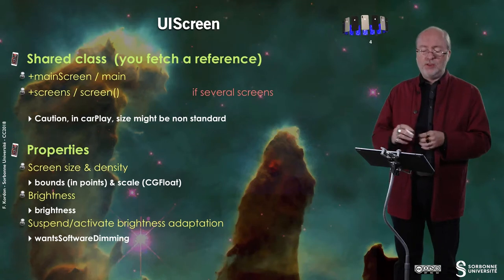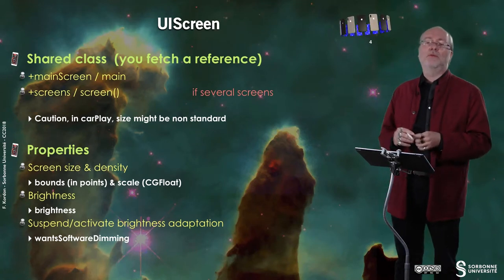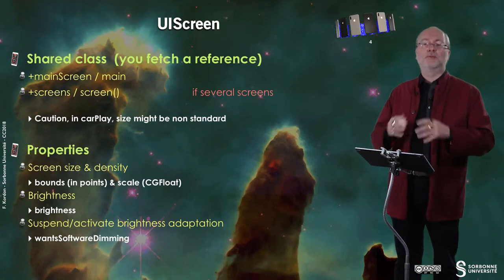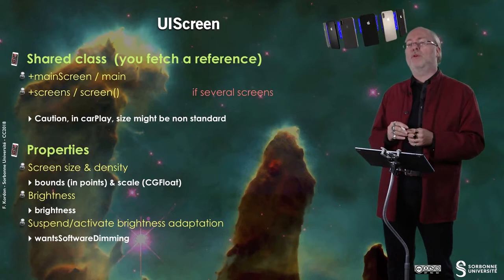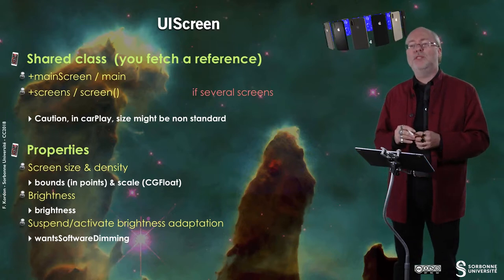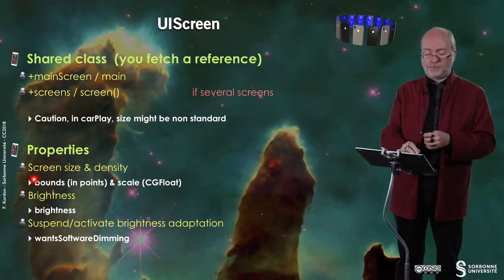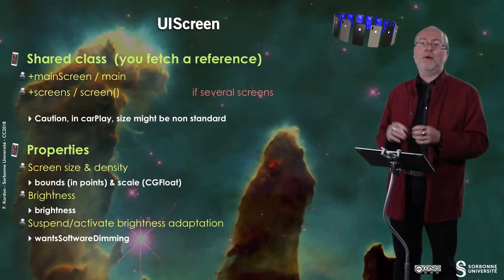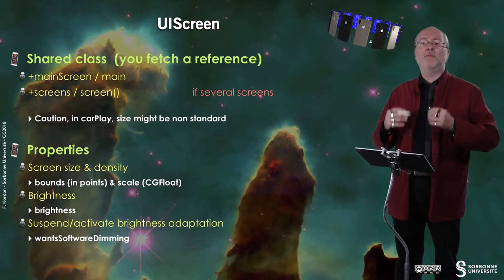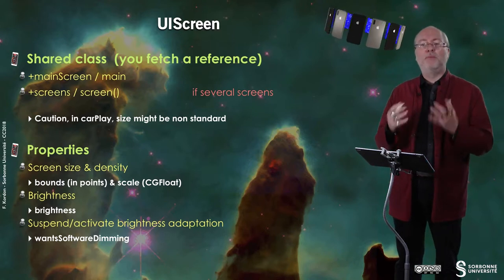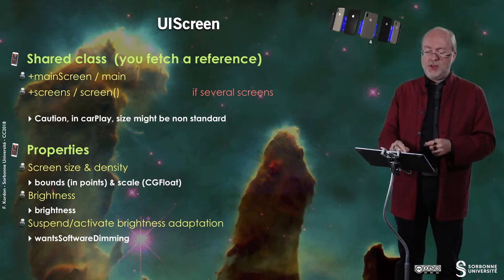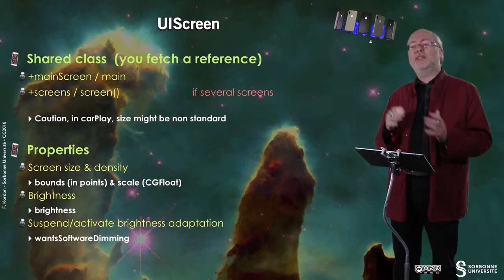The interesting UIScreen properties for our purpose are screen size and density. For the size, you get the bounds, and all information in the bounds is provided in points. The scale is provided as a CGFloat or a double, representing the pixel density ratio.